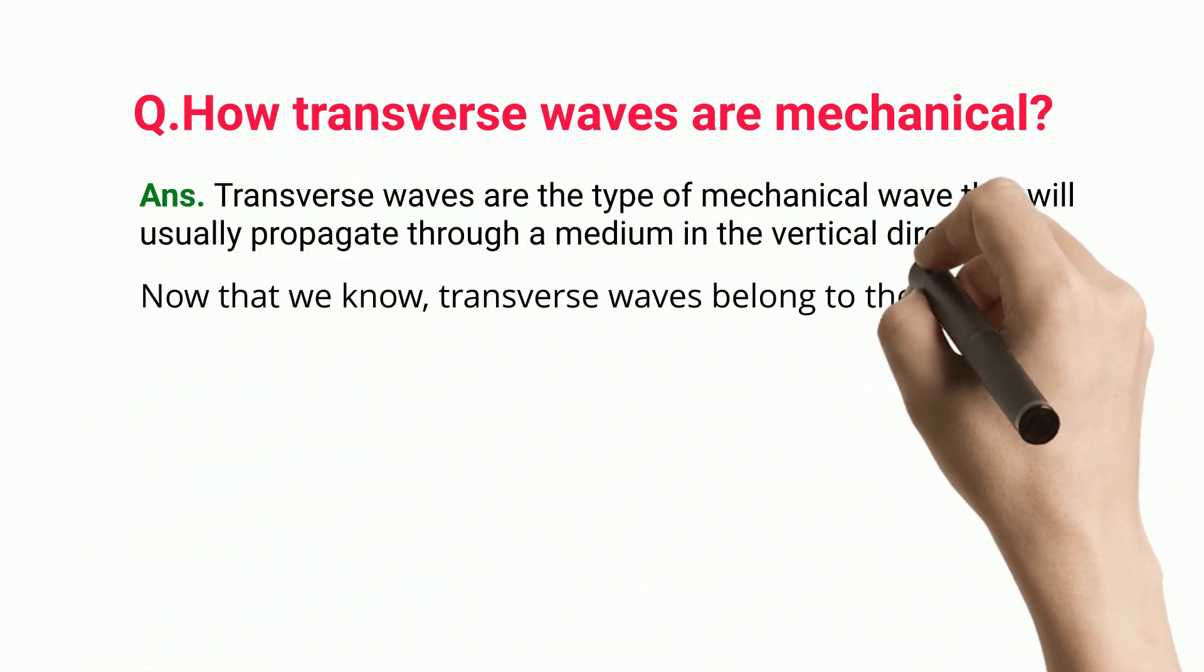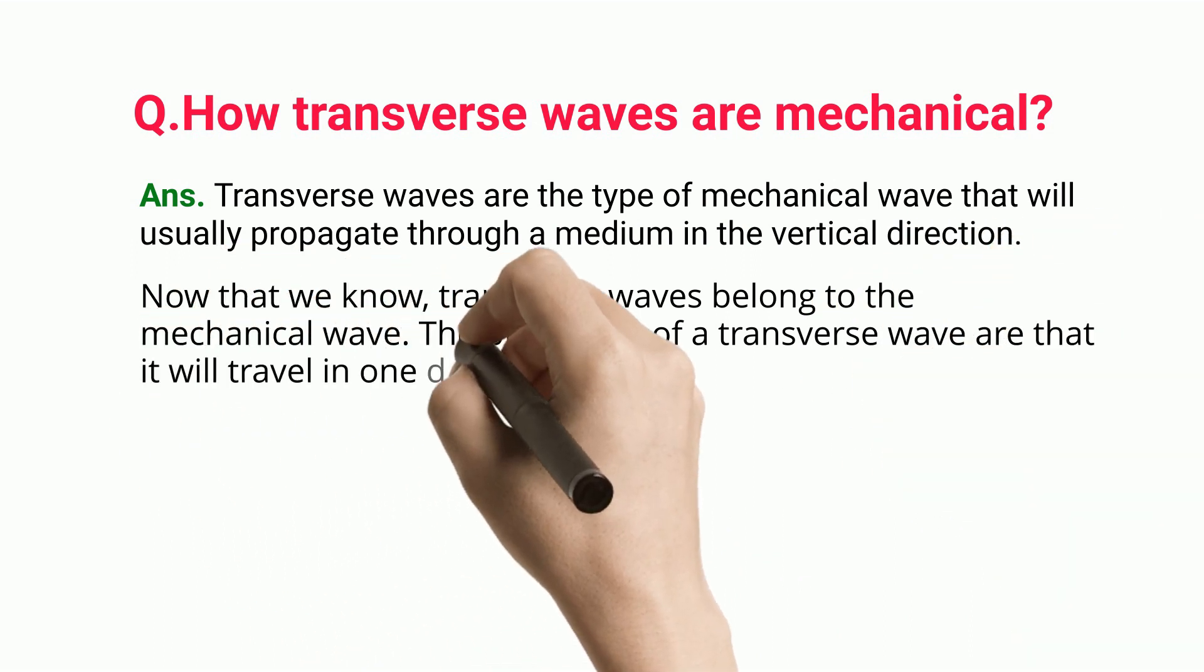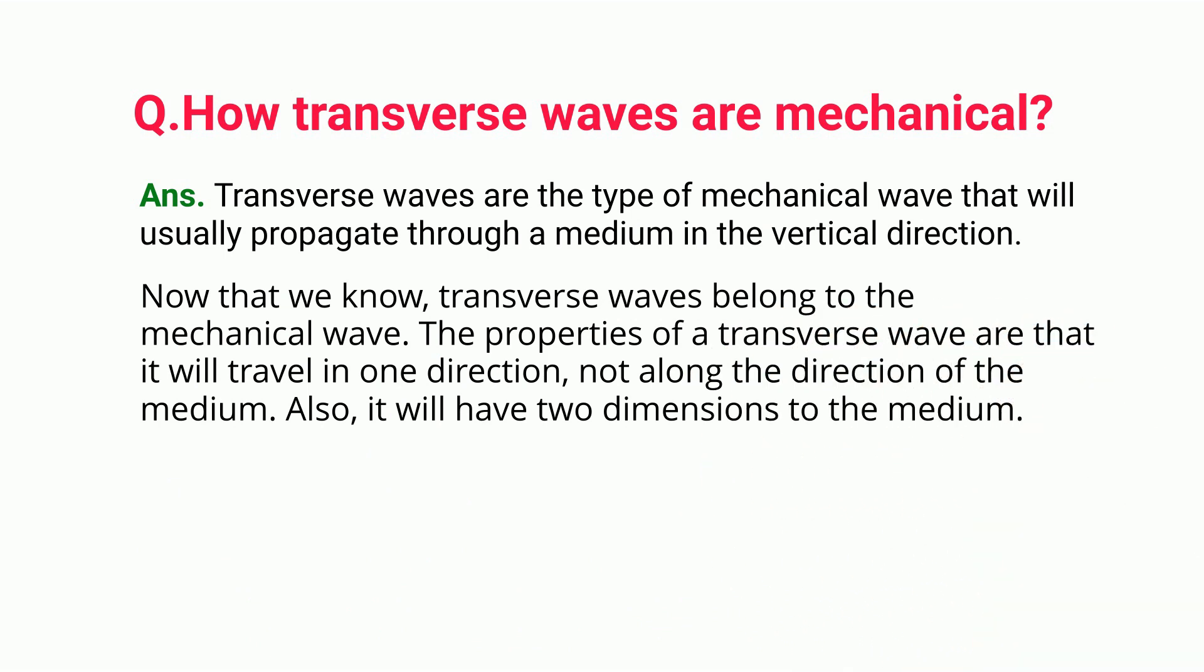Now that we know transverse waves belong to the mechanical wave, the properties of a transverse wave are that it will travel in one direction, not along the direction of the medium. Also, it will have two dimensions to the medium.